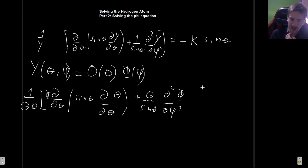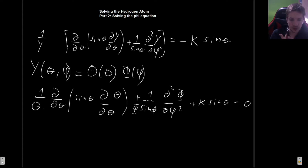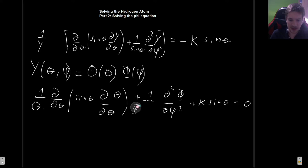We move the k sin(theta) term to the left-hand side, giving plus k·sin(theta) equals zero. Now we multiply through by Theta·Phi so that in the first term the Phi's cancel out, and in the second term the Theta's cancel out. Then we multiply everything by sin(theta) to get rid of the remaining sine factor, obtaining sin²(theta)·k and a sin(theta) in the appropriate term.